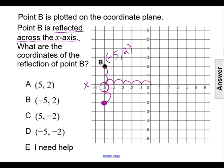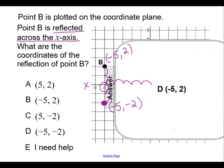Reflecting point B across the x-axis brings us to (-5, -2). The x values are the same but we have the opposite of the y value. So the coordinates of B after the reflection are (-5, -2), which is answer choice D.